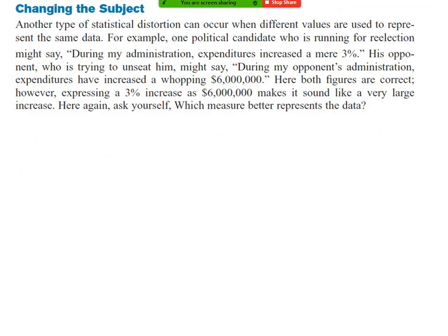Another type of statistical distortion can occur when different values are used to represent the same data. For example, one political candidate running for re-election might say, 'During my administration, expenditures increased a mere 3%.' His opponent might say, 'During my opponent's administration, expenditures have increased a whopping $6 million.' Both figures are correct. However, expressing a 3% increase as $6 million makes it sound like a very large increase. Ask yourself: which measure better represents the data?